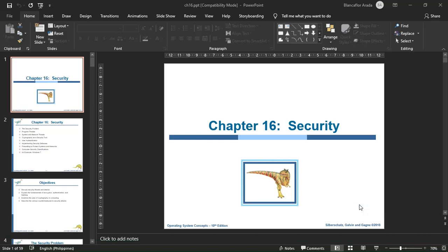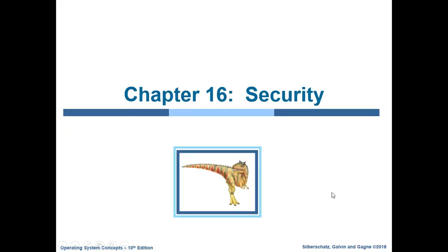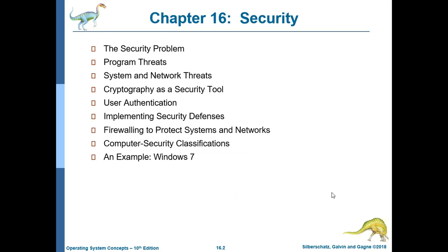Good day to all of you. We're already in chapter 16 of the operating systems lecture series, which is all about security. We will learn many terms and situations in which security is compromised and how to solve these issues. The contents of this chapter include the security problem, program threats, system and network threats, cryptography as a security tool, user authentication, implementing security defenses, firewalling to protect systems and networks, computer security classifications, and an example showing how security works in Windows 7.